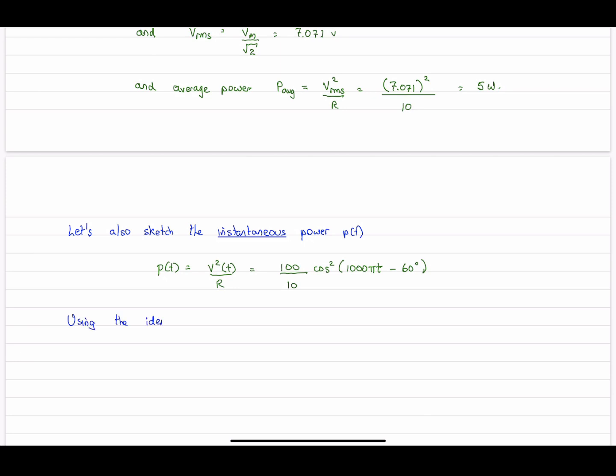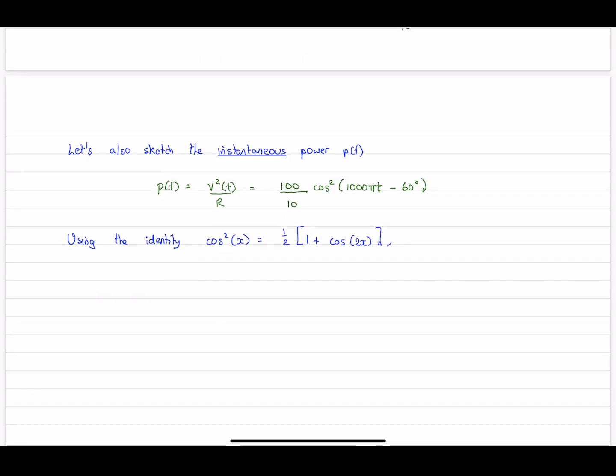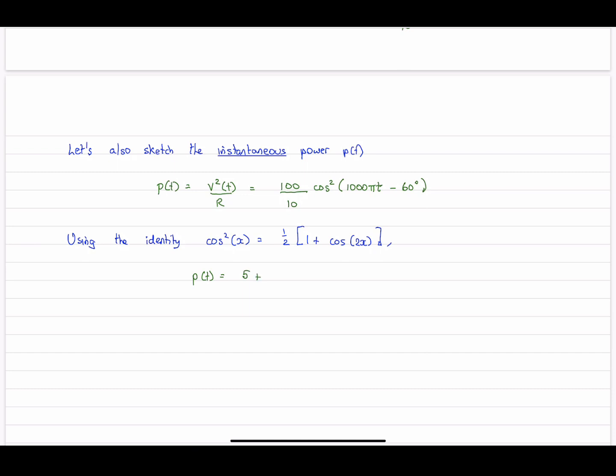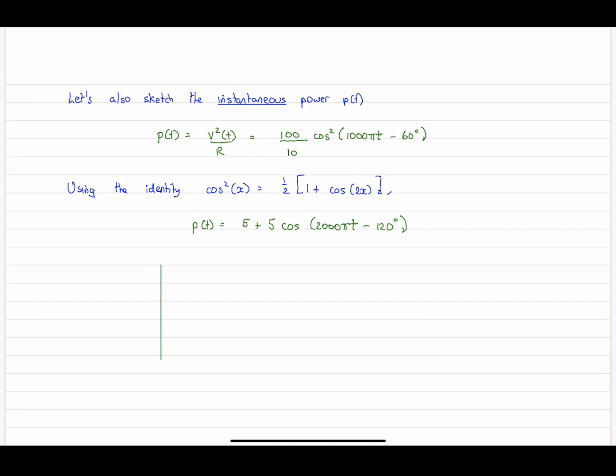And plug in our numbers. We get 100 over 10 cos² now. And we'll make use of a very handy trig identity here. So if we have a cos², we can replace it with this simple expression here. A half times 1 plus cos(2x). So if we apply that to our instantaneous power, we get 5, a constant, plus 5 times a cosine wave now of double the frequency and double the phase angle. So if we sketch this thing, it's always positive. Notice that this is always positive. And so it peaks out at 10 watts. But right down the middle, the average value of this cosine wave is halfway.